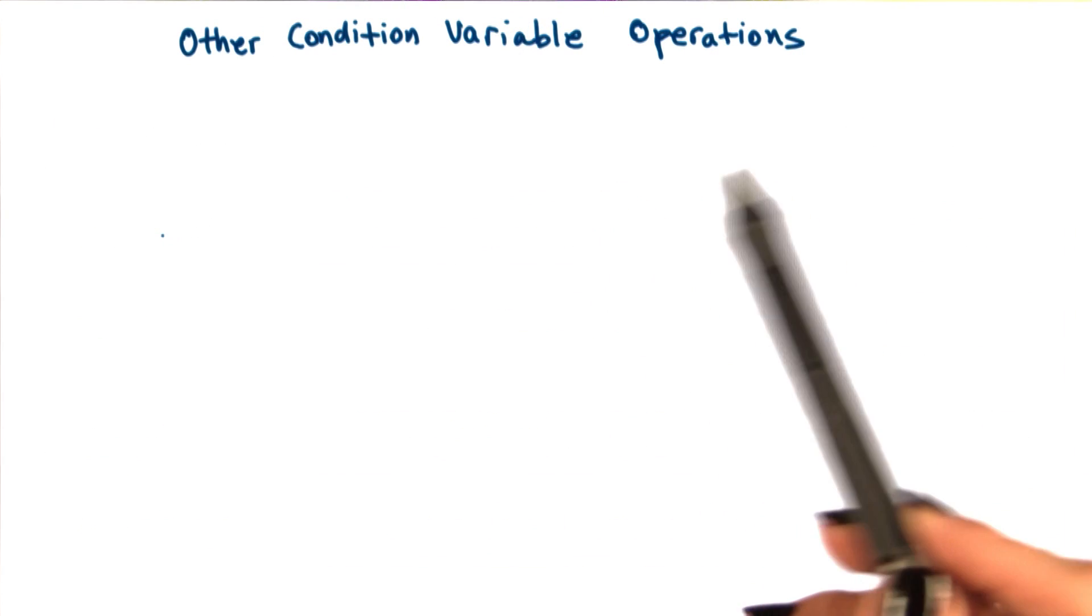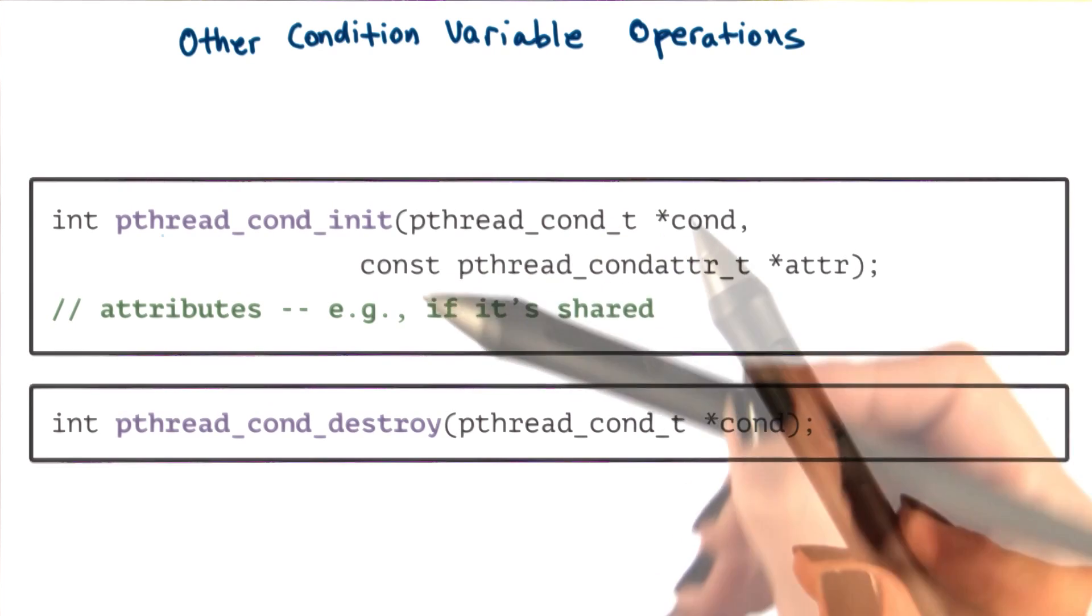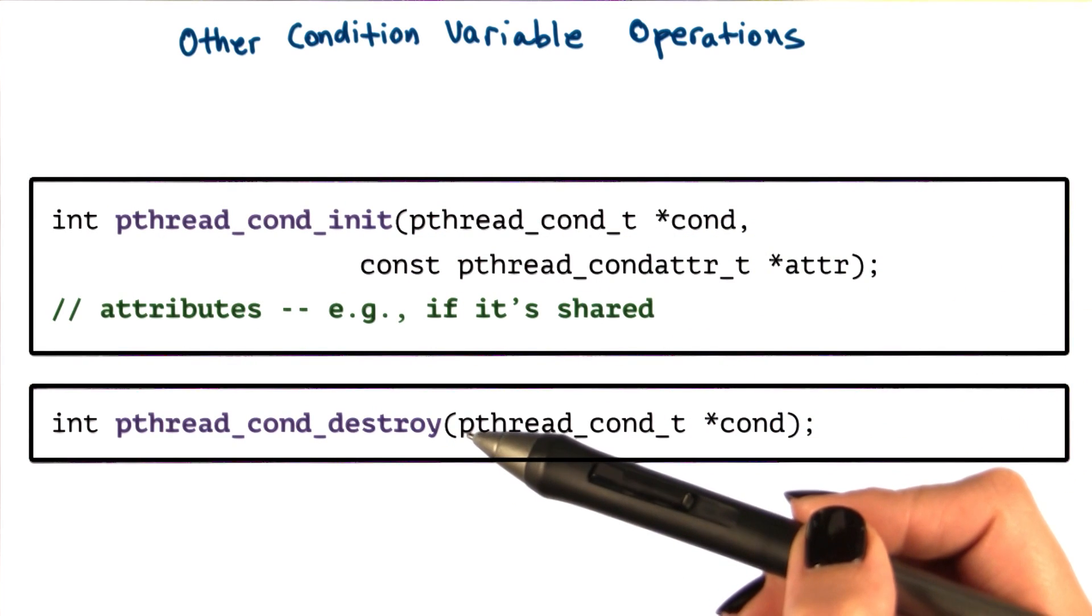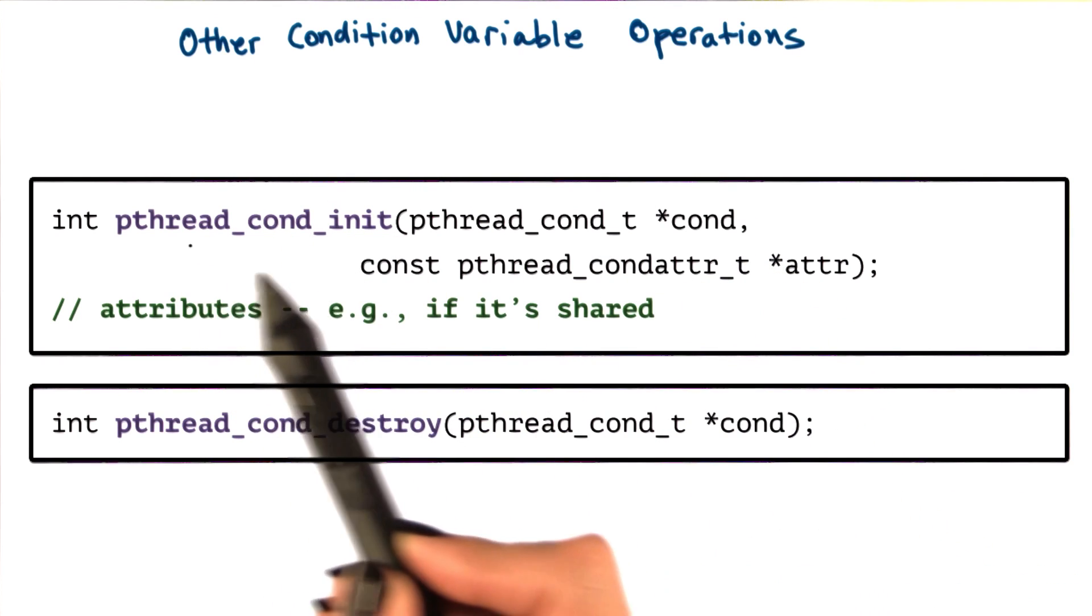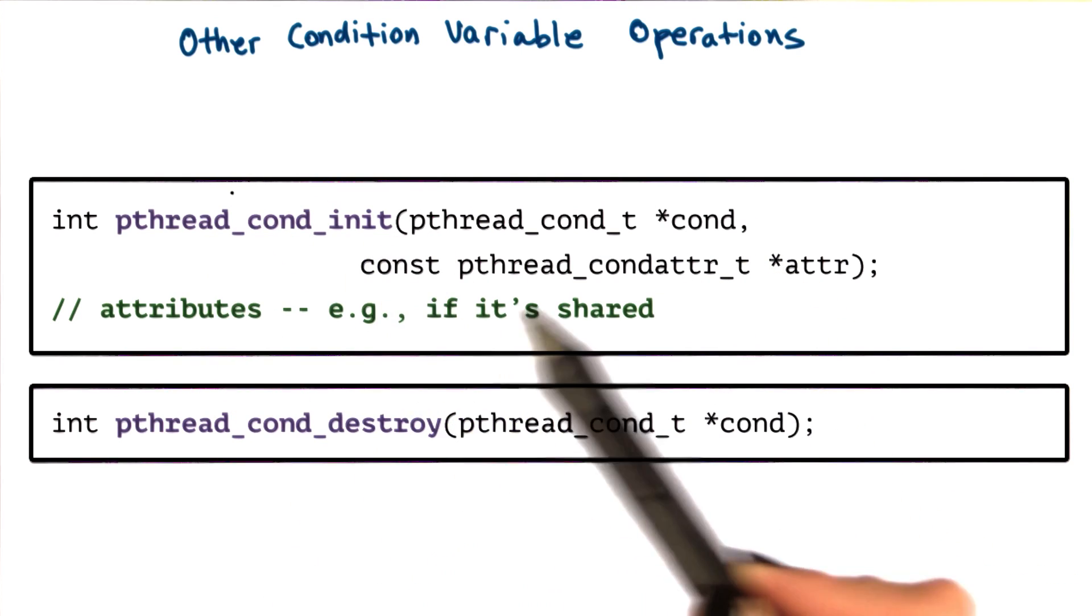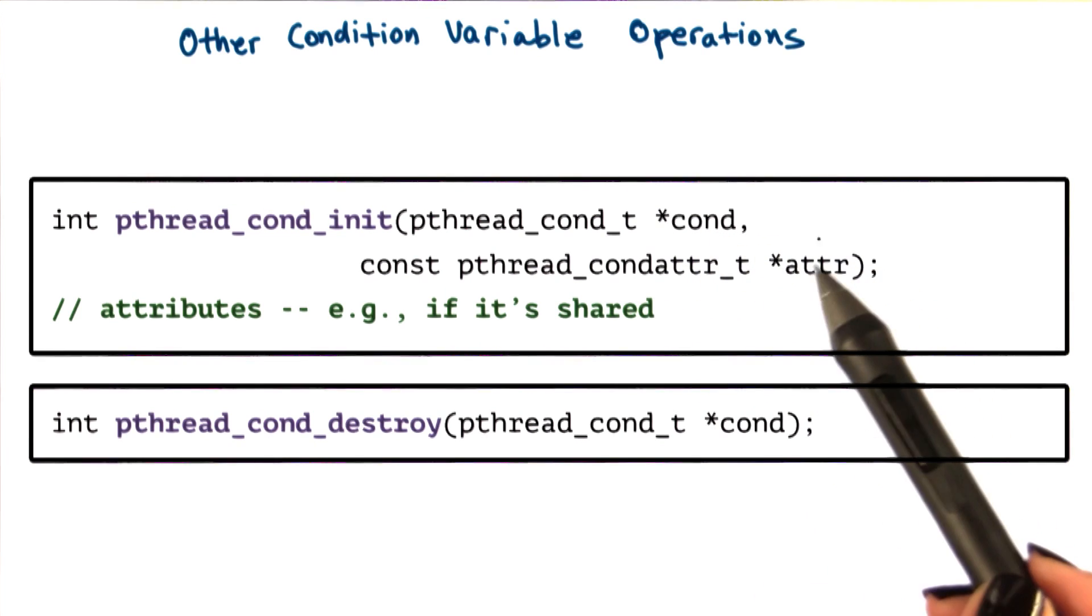There are also some other common operations that are used in conjunction with condition variables. These include the init and destroy functions. pthread_cond_init is pretty straightforward. You have to use this operation in order to allocate the data structure for the condition and in order to initialize its attributes.